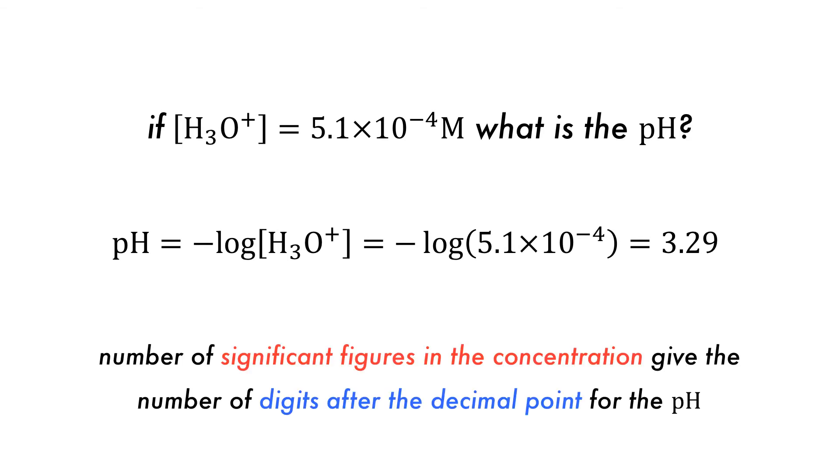For these measurements, the number of significant figures in the concentration gives the number of digits after the decimal point for the pH, which is why in this example the concentration has two significant figures and pH value has two digits to the right of the decimal point.